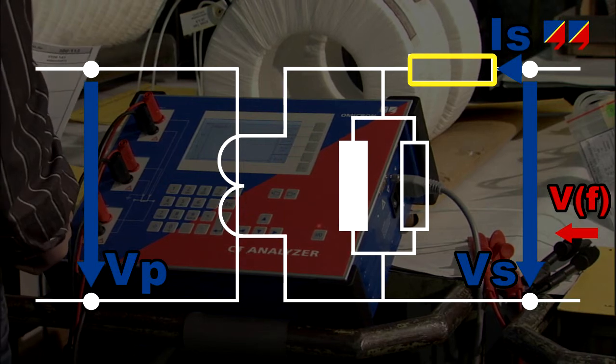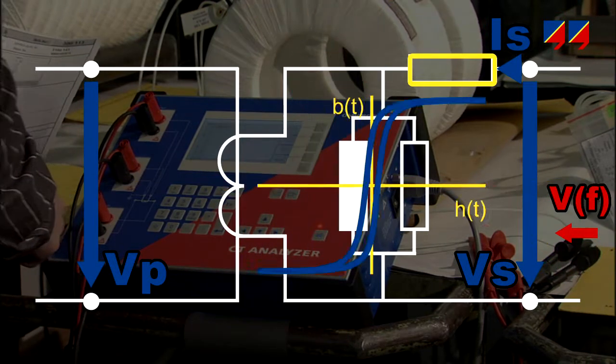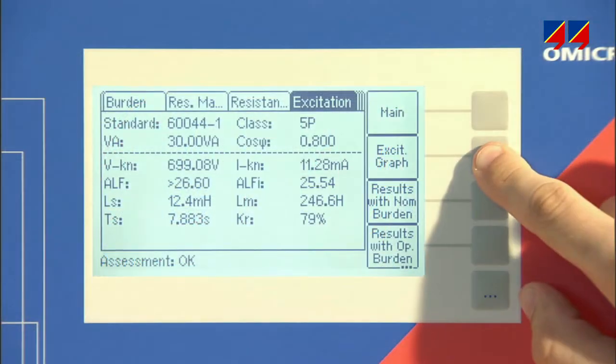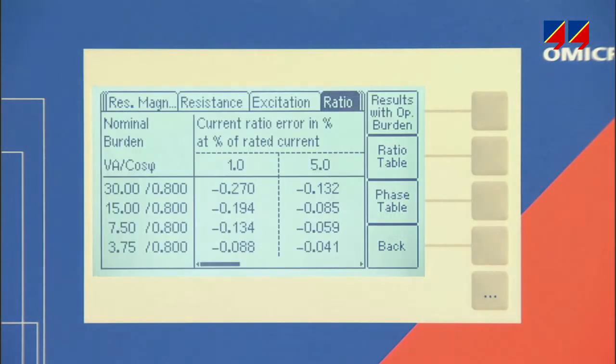It measures the DC winding resistance, the excitation curve, and the turns ratio, determines all the parameters of the CT model, and displays the accuracy data for all current and burden values.